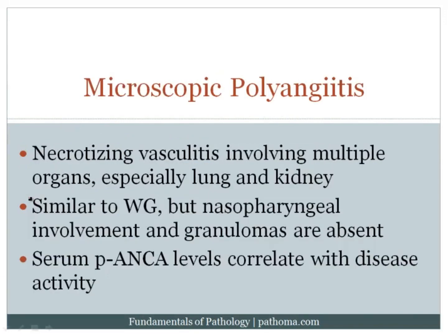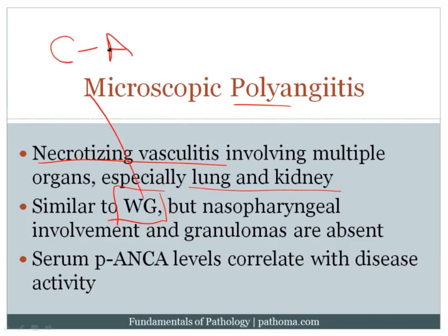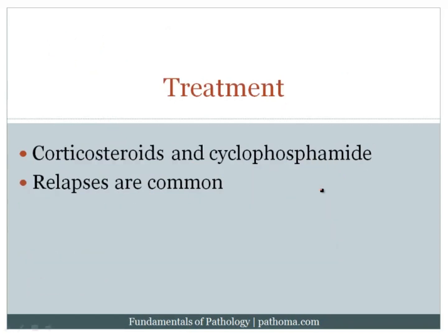Another small vessel vasculitis is microscopic polyangiitis — a necrotizing vasculitis involving multiple organs, especially the lung and kidney. It's very similar to Wegener's granulomatosis, however you'll be missing a few things: no nasopharyngeal involvement, no granulomas on biopsy, and instead of C-ANCA, it will have P-ANCA. Although it involves lung and kidney and can look clinically similar to Wegener's, it's distinct by lacking nasopharyngeal involvement, lacking granulomas, and being P-ANCA positive. Treatment is cyclophosphamide and corticosteroids, and relapses are common.